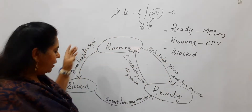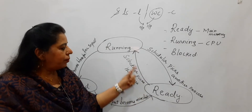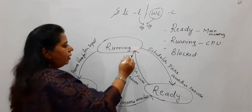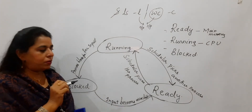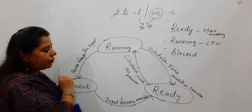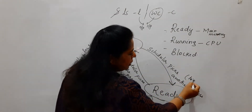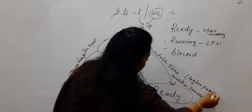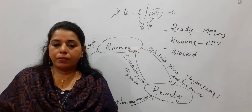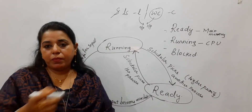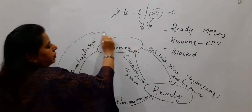You can see the arrow directions going in two ways: whenever a process is blocked, another process can be picked from the ready queue. Also, another situation occurs when a running process has lower priority and a higher priority process is picked from the ready queue and given to the CPU. In that case, the operating system takes the higher priority process from main memory, allocates it to the CPU, and the existing process is preempted. This is how you explain the complete process state diagram.